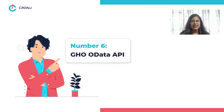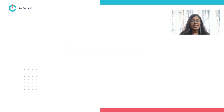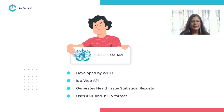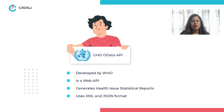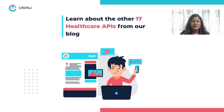Number six: GHO OData API. GHO OData API is a web API created by the World Health Organization that generates and shares statistical reports about various health issues from different corners of the world using XML and JSON format.